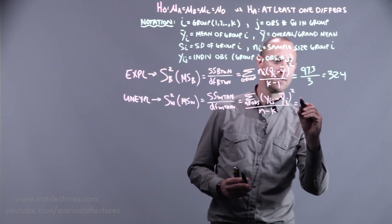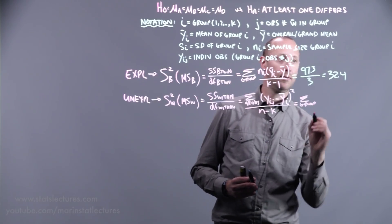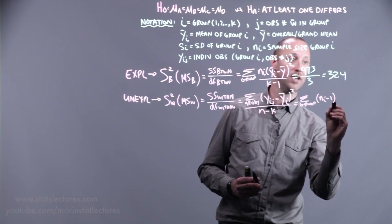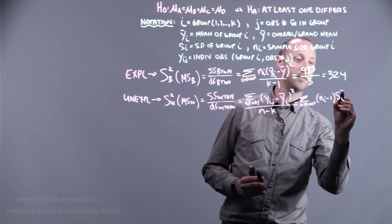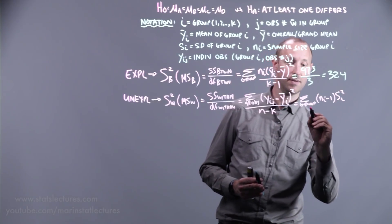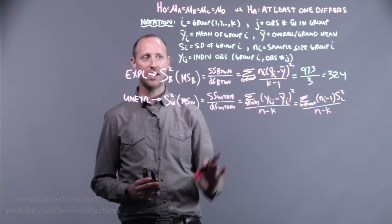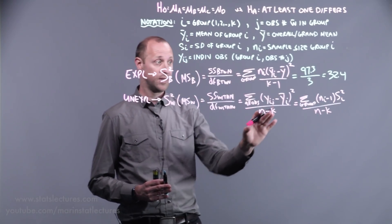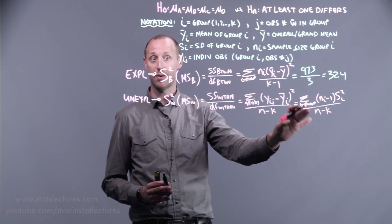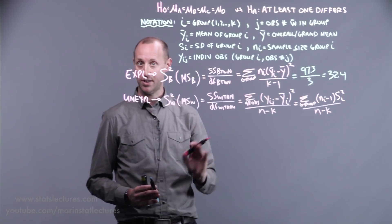We can also express this as summing over the groups. Each group's sample size minus one, times the variance, the sample variance of each group, divided by its degrees of freedom. And the reason why I write it this way is, you can take a moment yourself to note that this here is the exact formula for the pooled variance that we talked about in the two-sample t-test, assuming equal variance in the two groups.